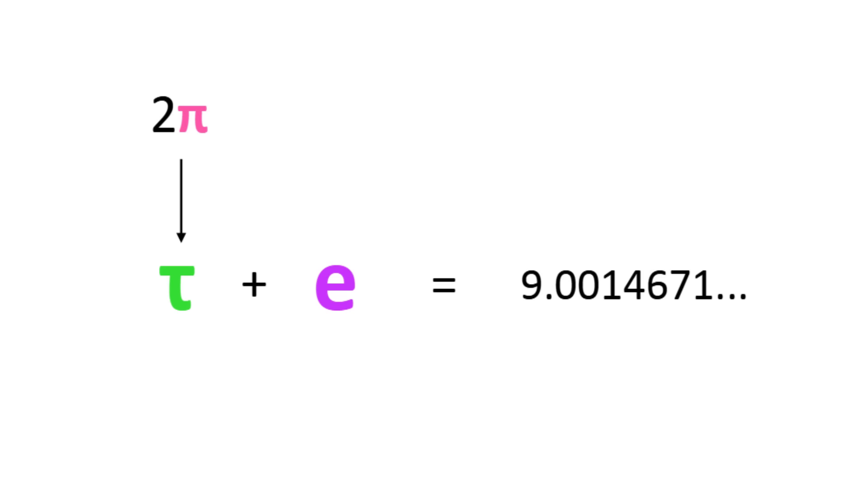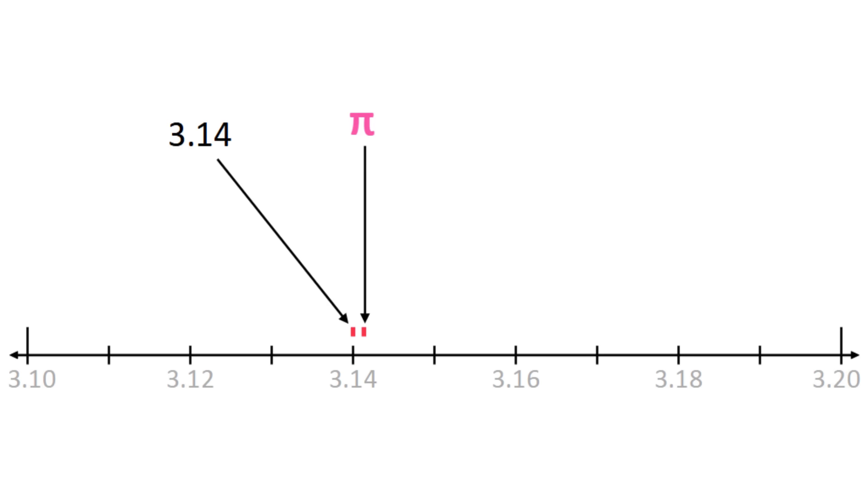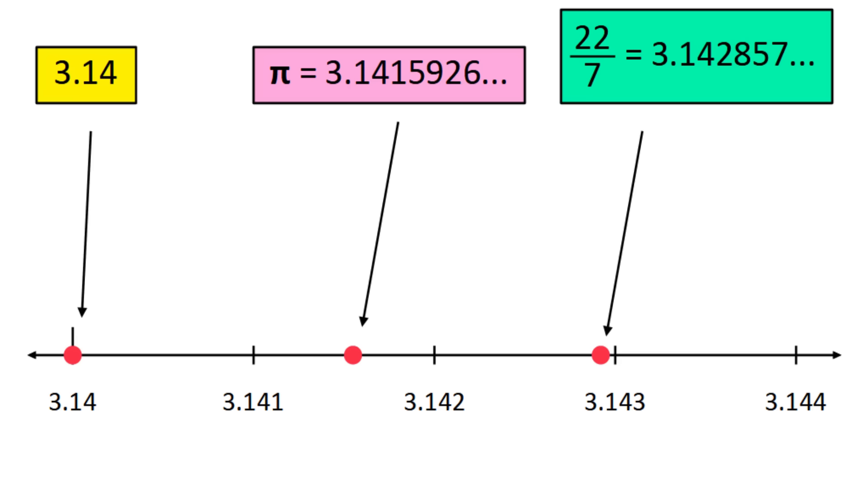Now let's look at some coincidences that are actually useful. Everyone knows pi starts at 3.14, but the approximation 22 over 7, or 3 and a seventh, is actually closer to the real value of pi than 3.14.